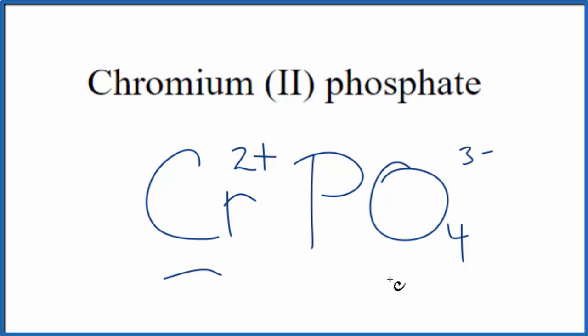So, because we have a metal and a group of nonmetals here, this is an ionic compound, and these charges, they need to balance. They need to give us a net charge of zero. Right now, we have a 2+ and a 3-, so that's a little bit difficult.